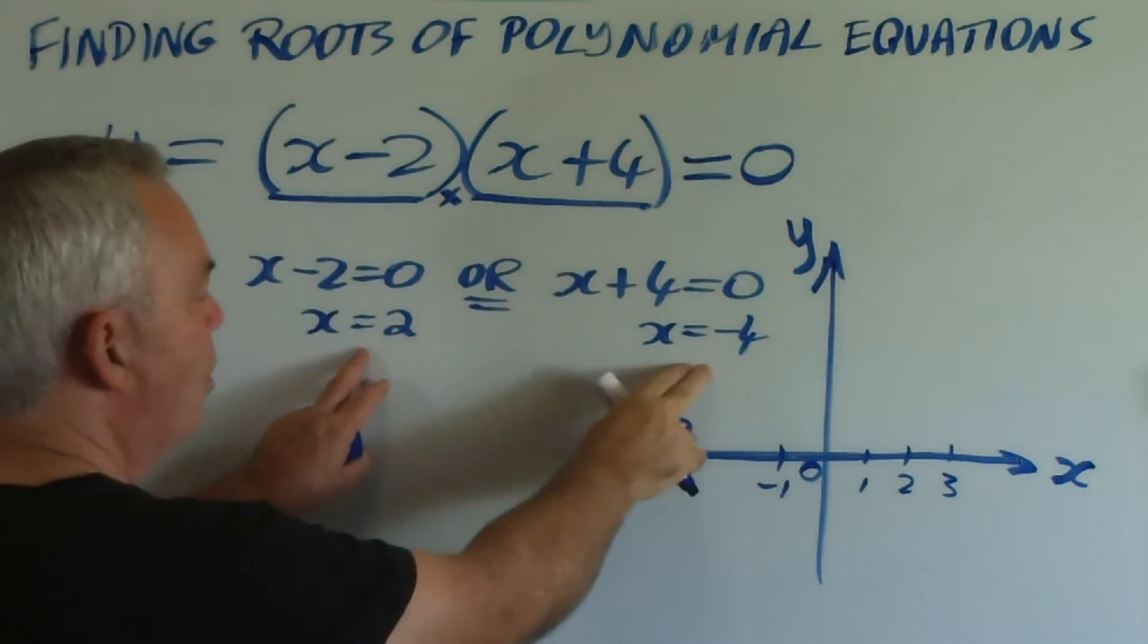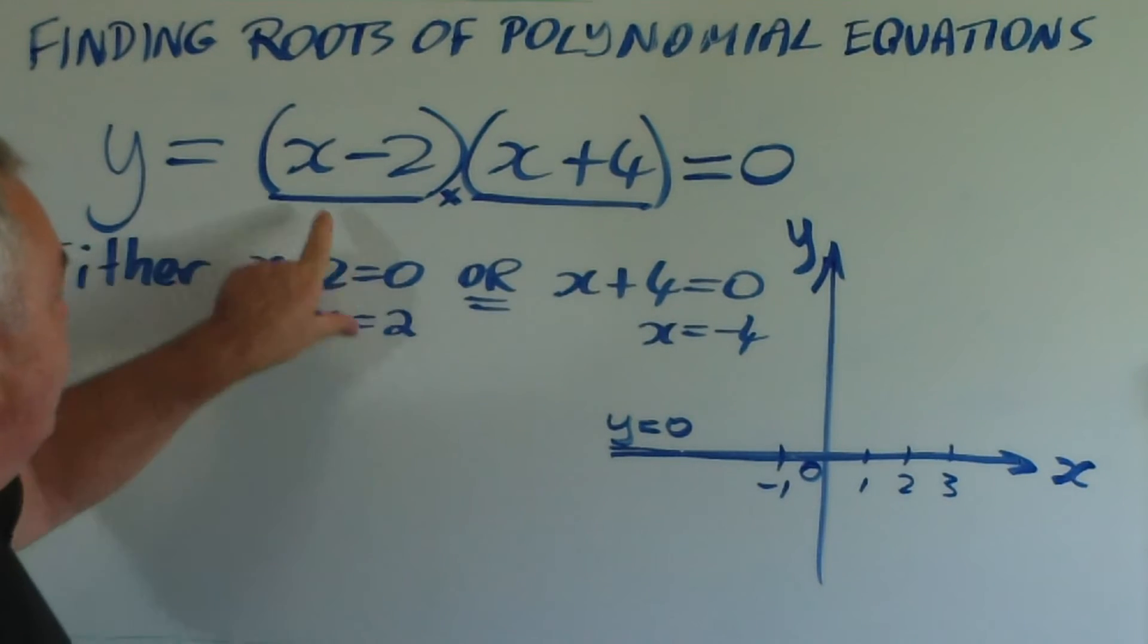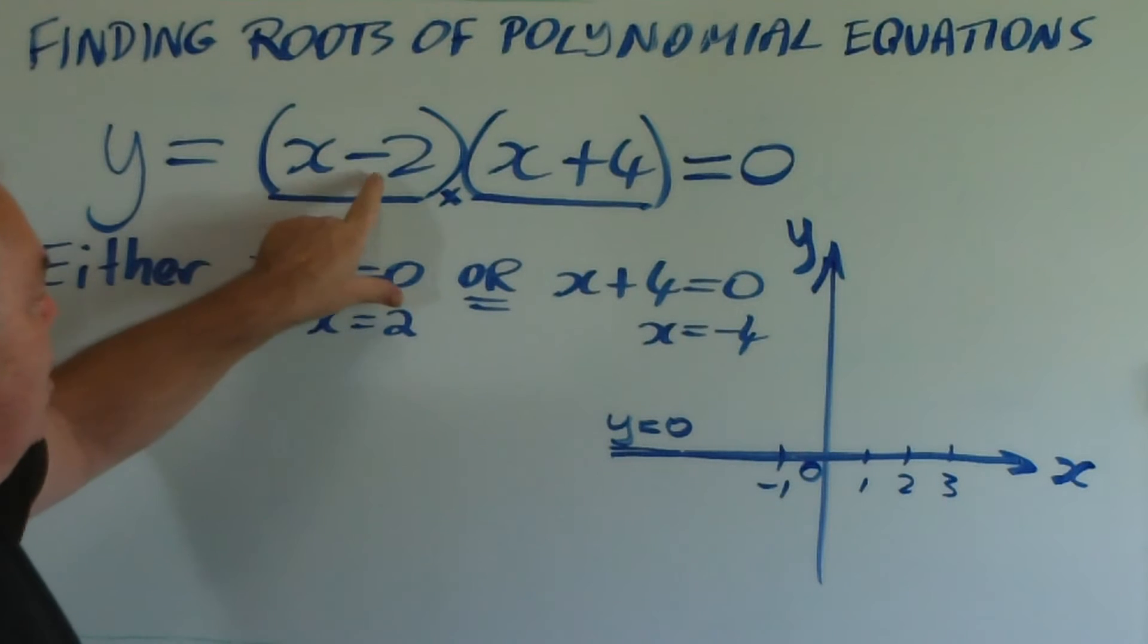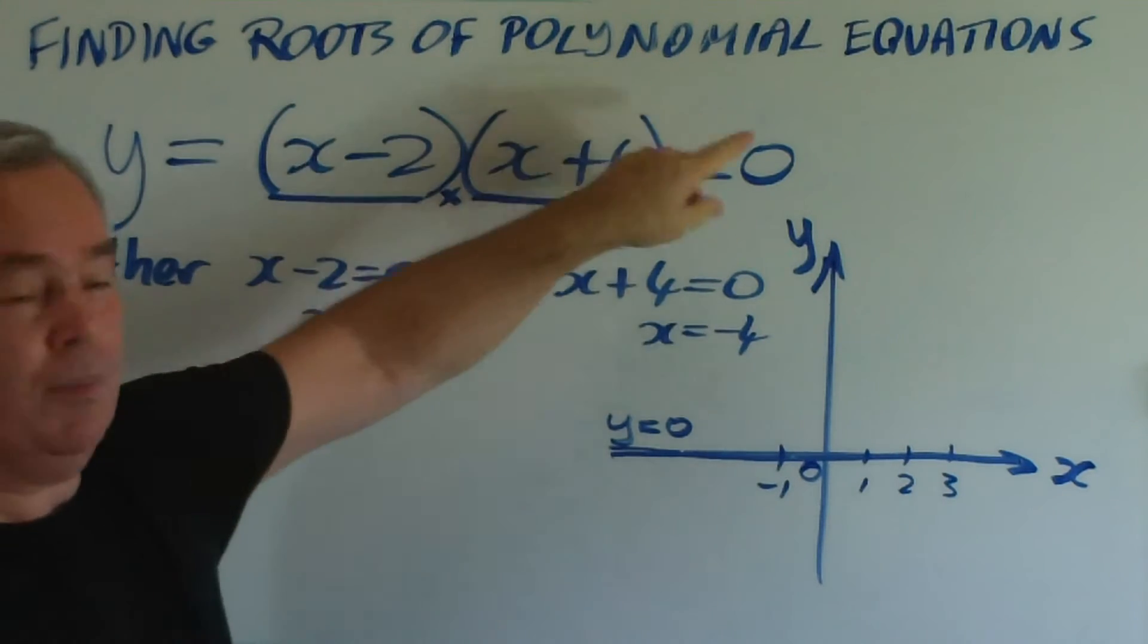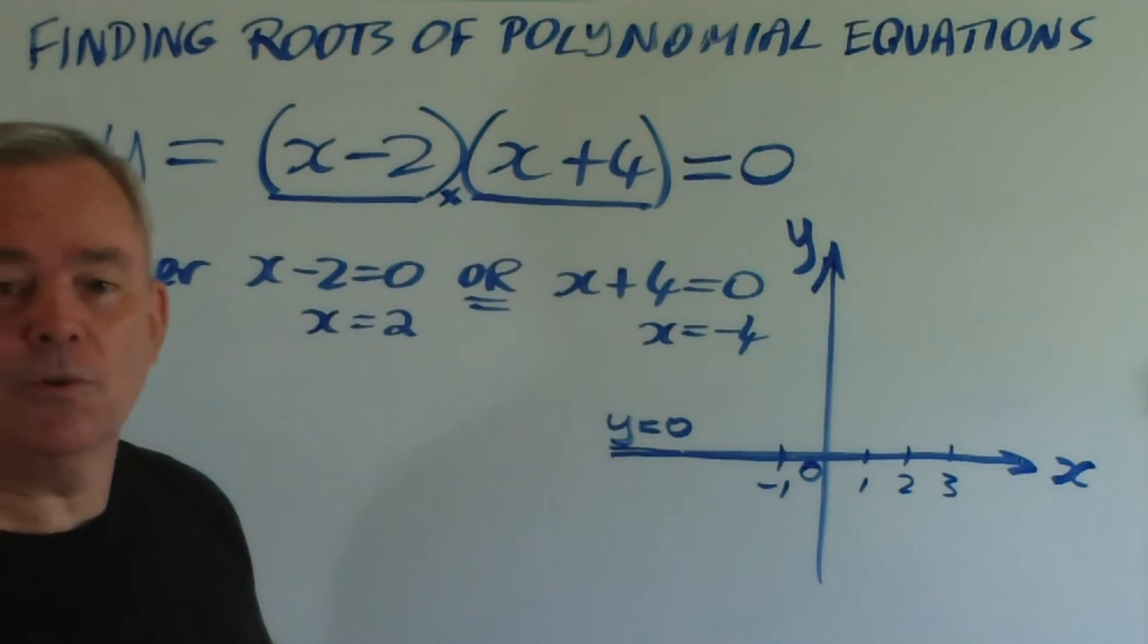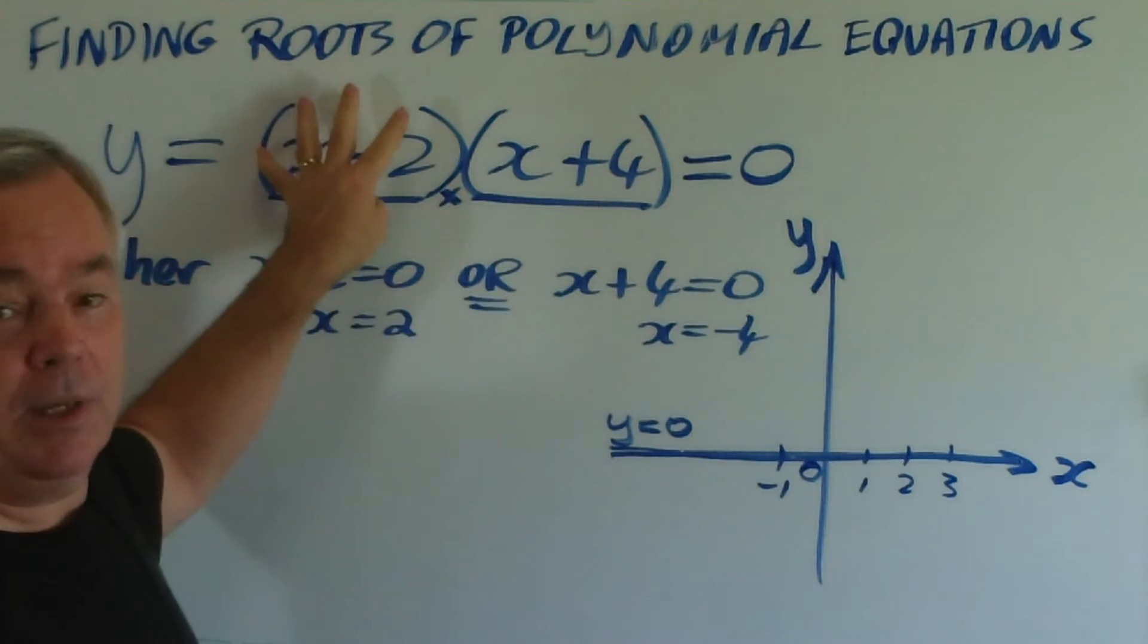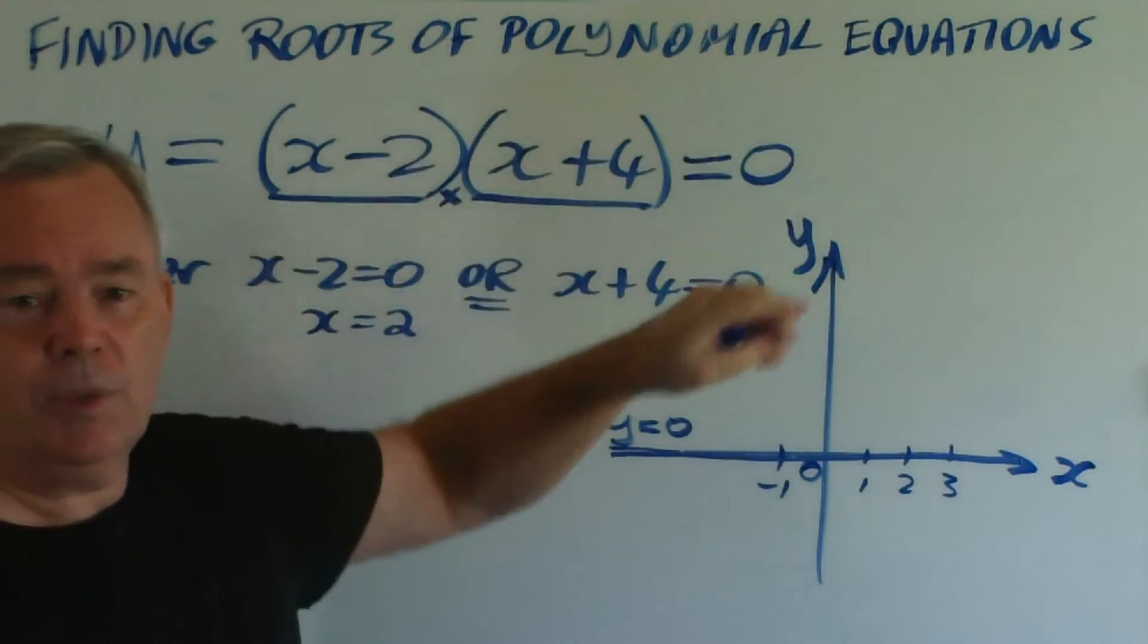And these are what we call the roots of this equation, because they make it true. If x is worth two, we get two take away two is zero. And we don't care what that is worth, because zero times something is zero. And if x is minus four, we get minus four plus four is zero. And again, we don't care what the other term is, because anything times zero will be zero.